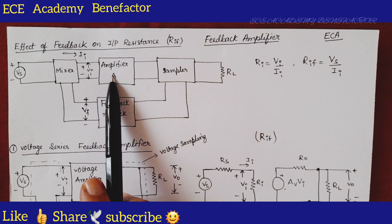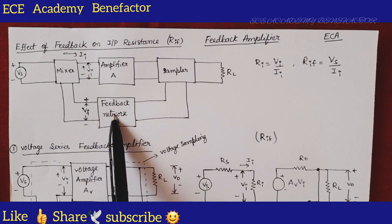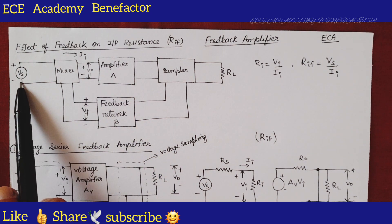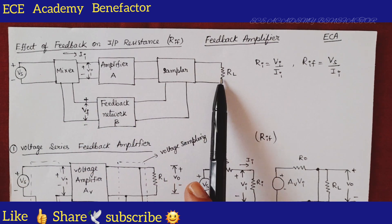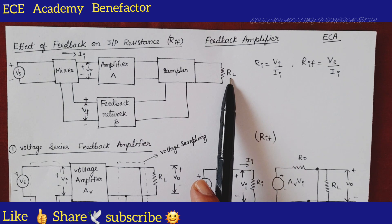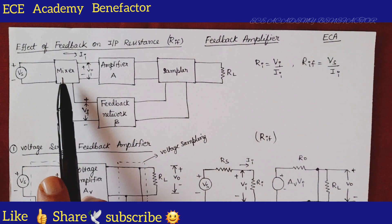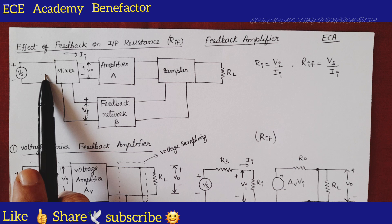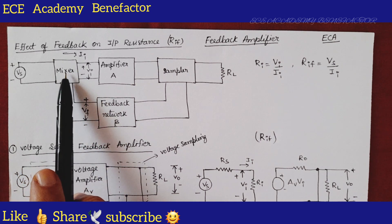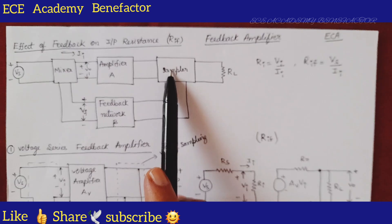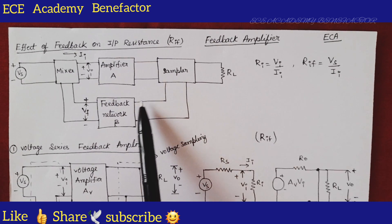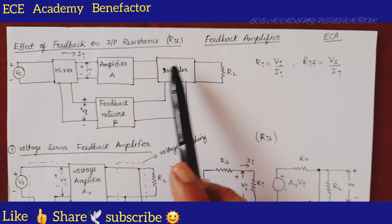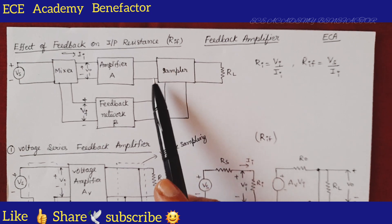We need an amplifier of gain A and a feedback network of ratio beta. To the amplifier, a voltage source Vs is connected as the input signal, and the output is observed across RL. At the input side, a mixer is connected which mixes the feedback signal and the incoming input signal — the mixer is a summer circuit. At the sampler, we consider how the output is sampled: whether it is voltage sampling or current sampling.